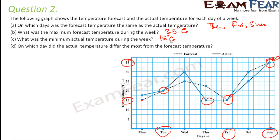On which day did the actual temperature differ the most from the forecast temperature? On Monday, the difference between the two temperatures is somewhere between 15 and 20, so around 2.5 degrees. On Tuesday the difference is zero. On Wednesday the difference is about 5 degrees. On Thursday, the difference spans about three boxes — from 15 to 20 plus 2.5 — making it approximately 7.5 degrees.